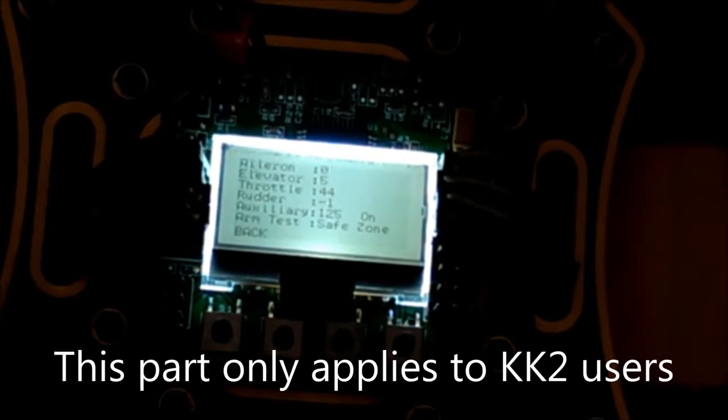Now, to hover my quad, I need Throttle 50. Now, you may not need 50. You may need 55. You may need 47. But that's something that you're going to have to figure out on your own. So, if I bring my Throttle Stick up just a little bit, just above the halfway point, it'll look something like this.